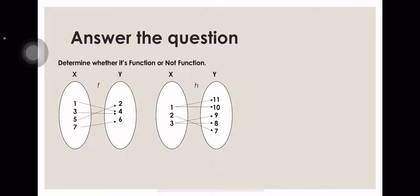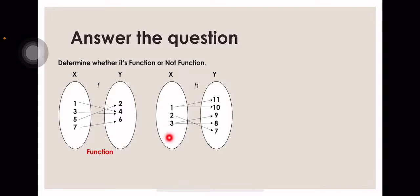What do you think the answer is? Good job — this is a function. The other diagram has X values 1, 2, and 3, and Y values 11, 10, 9, 8, and 7. This is 1-to-many. The value 1 maps to two Y values — 11 and 10. The value 2 also has two Y values. So this is 1-to-many, meaning this is not a function.